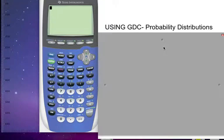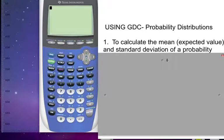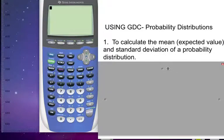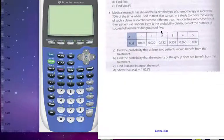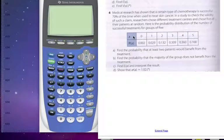We're going to use our GDC to do some probability distributions. In this podcast, we're going to calculate the mean expected value and standard deviation of probability distributions, and then we're going to draw a histogram of the probability model. So let's consider this example we have: medical research that has chemotherapy successful 70% of the time when used to treat skin cancer. Here is our probability model, or our probability distribution.